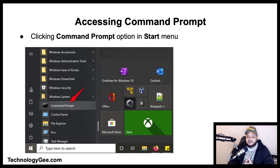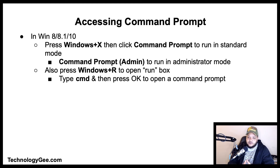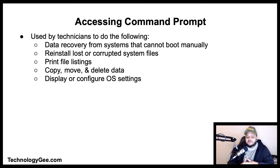The command prompt can be accessed on a Windows computer by clicking the command prompt option in the Start menu. In Windows 8, 8.1, and 10, you can press the Windows key plus X and then press Command Prompt to run it in standard mode, or Command Prompt Admin to run it in administrative mode. You can also press the Windows key plus R to open the Run box, then type cmd or cmd.exe and press OK.